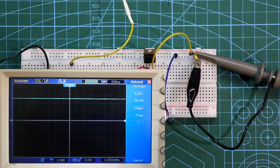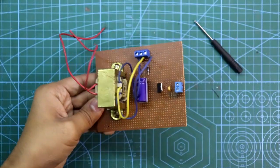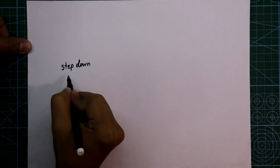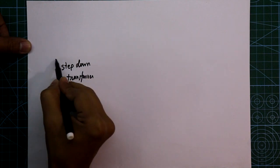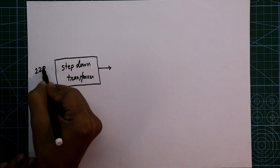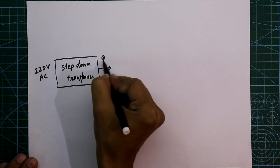Hello guys, in this video I'll show you how to make a simple power supply of 5 volt DC. To make this power supply we need a step down transformer that will step down the voltage from 220 volt AC to 9 volt AC.